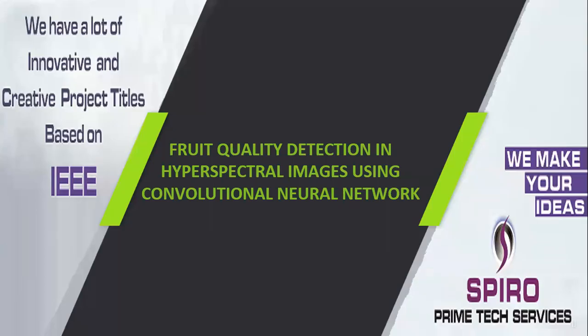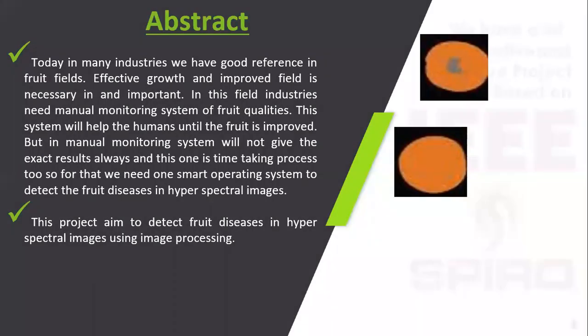Project code: IMP32. Project title: Fruit Quality Detection in Hyperspectral Images using Convolutional Neural Network. In this project, our aim is to detect inside fruit disease on hyperspectral images using MATLAB image processing.